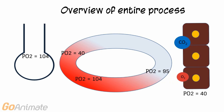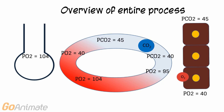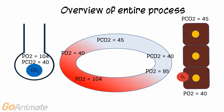Carbon dioxide produced by the tissues raises the tissue PCO2 to 45. The PCO2 of oxygenated blood entering the tissues is 40, causing carbon dioxide to diffuse into the blood and raising the blood PCO2 in the deoxygenated blood to 45. Carbon dioxide travels to the lungs and diffuses into the alveoli, which have a PCO2 of 40, and carbon dioxide is expelled from the lungs during exhalation.